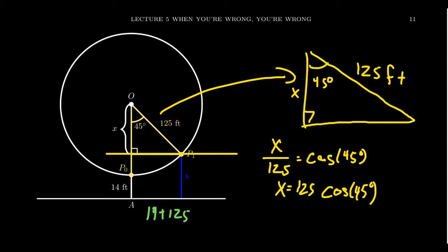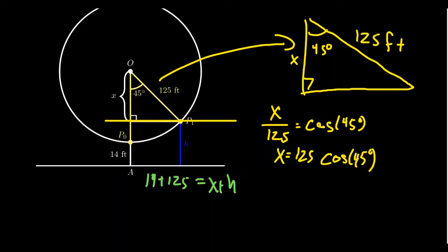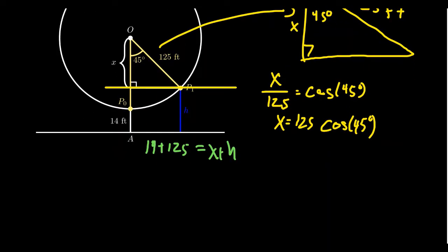But notice that if we take the distance from the center of the circle to the bottom of the ground there, that's going to be X plus H. So this number right here is equal to X plus H. The number H is what we want to know. X is something we found using trigonometry. So solving for H...